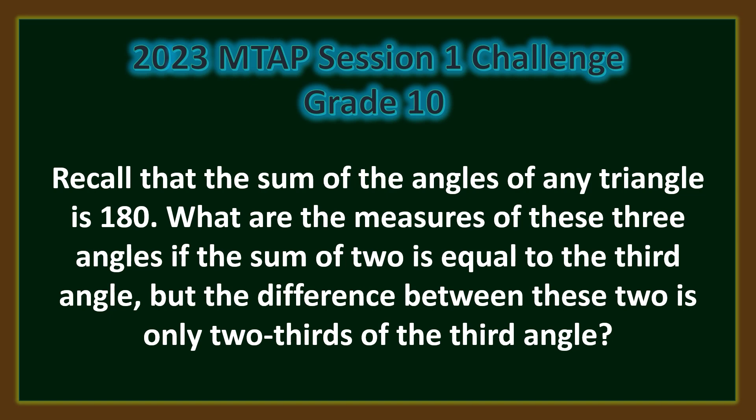Recall that the sum of the angles of any triangle is 180 degrees. What are the measures of these three angles if the sum of two is equal to the third angle, but the difference between these two is only two-thirds of the third angle?